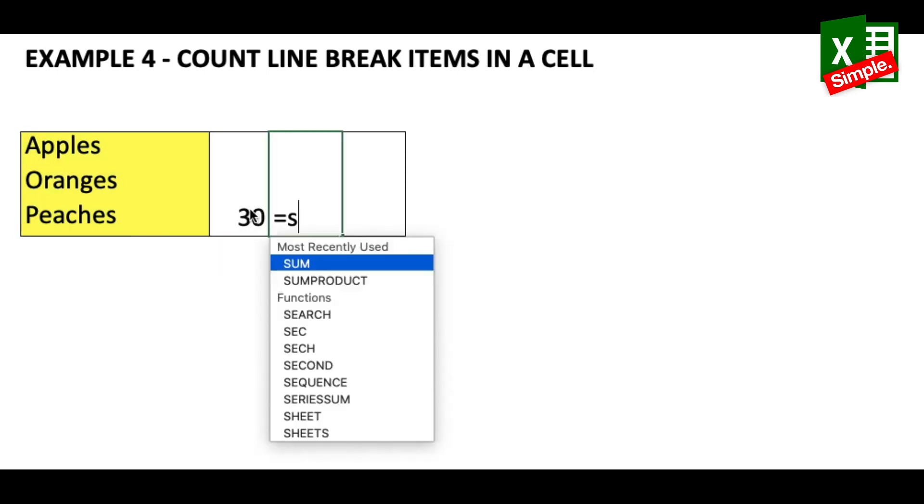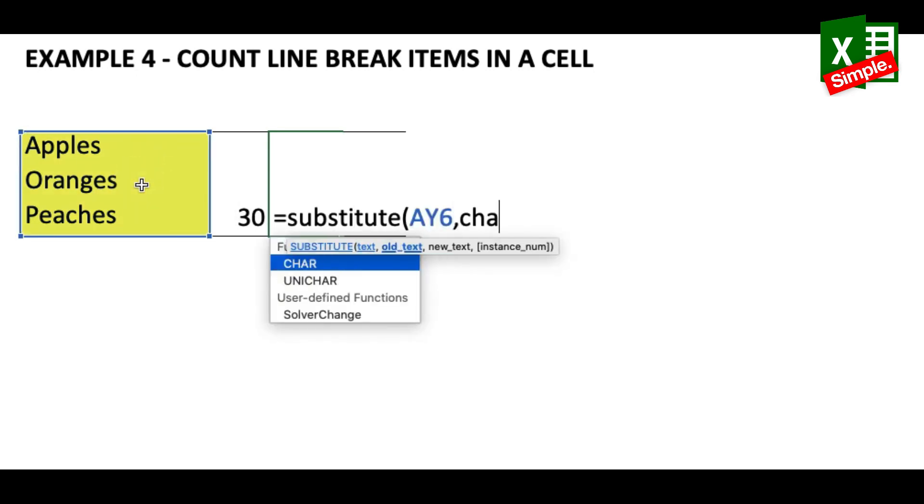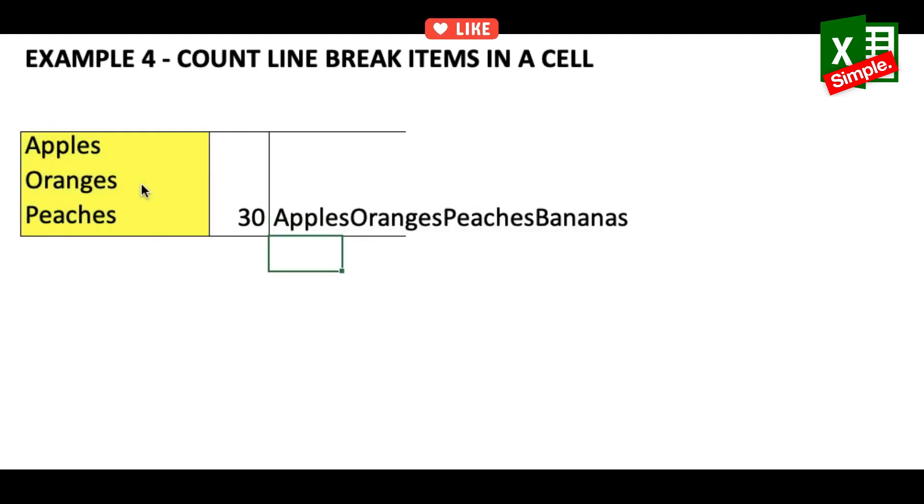Now what I'll do is SUBSTITUTE, the text is this one, comma, old text will be character 10, and then I'll just put two double quotes, bracket close. So what it has done is it has just removed the line breaks. This entire function I'll put inside a LEN and it should give me the new character count without the line breaks.